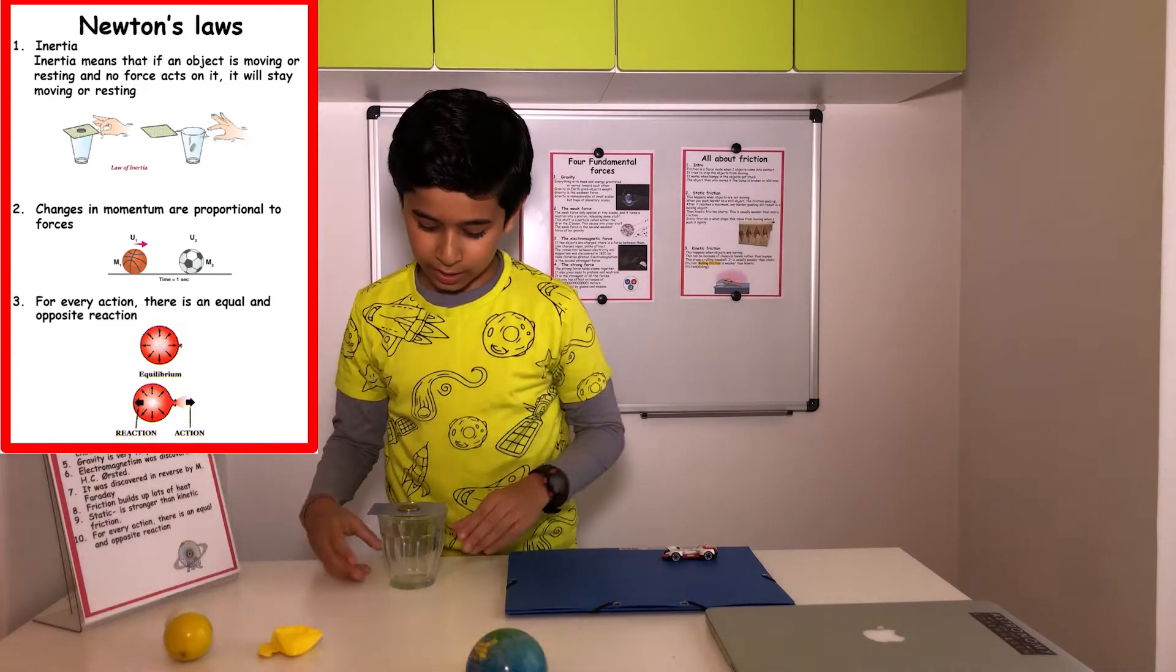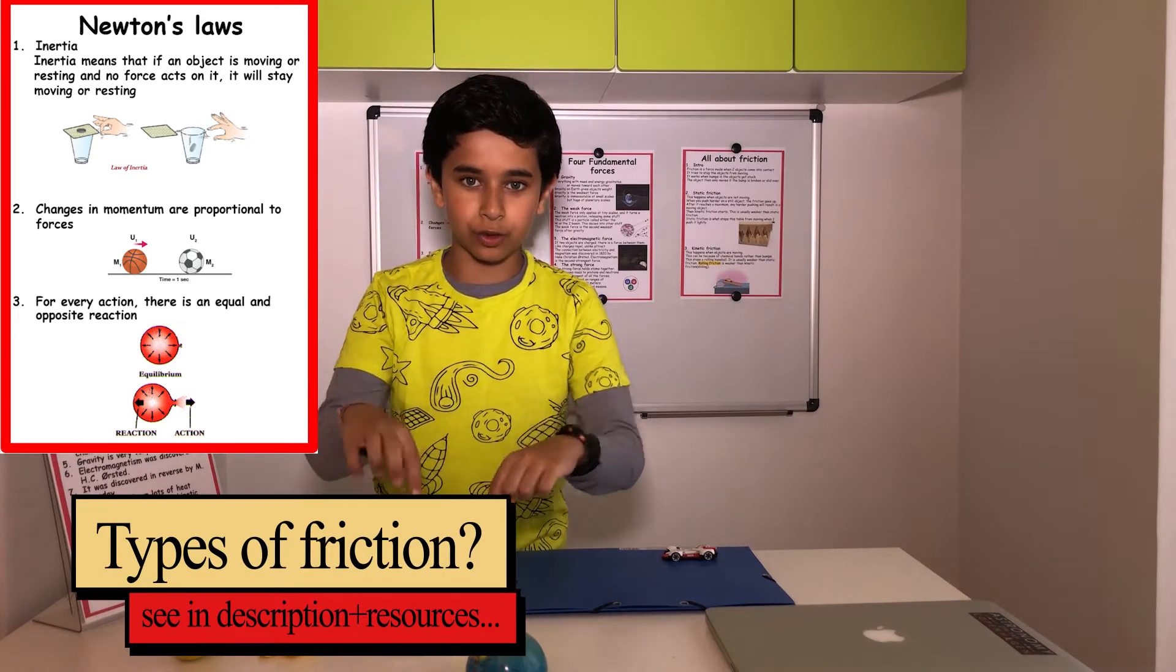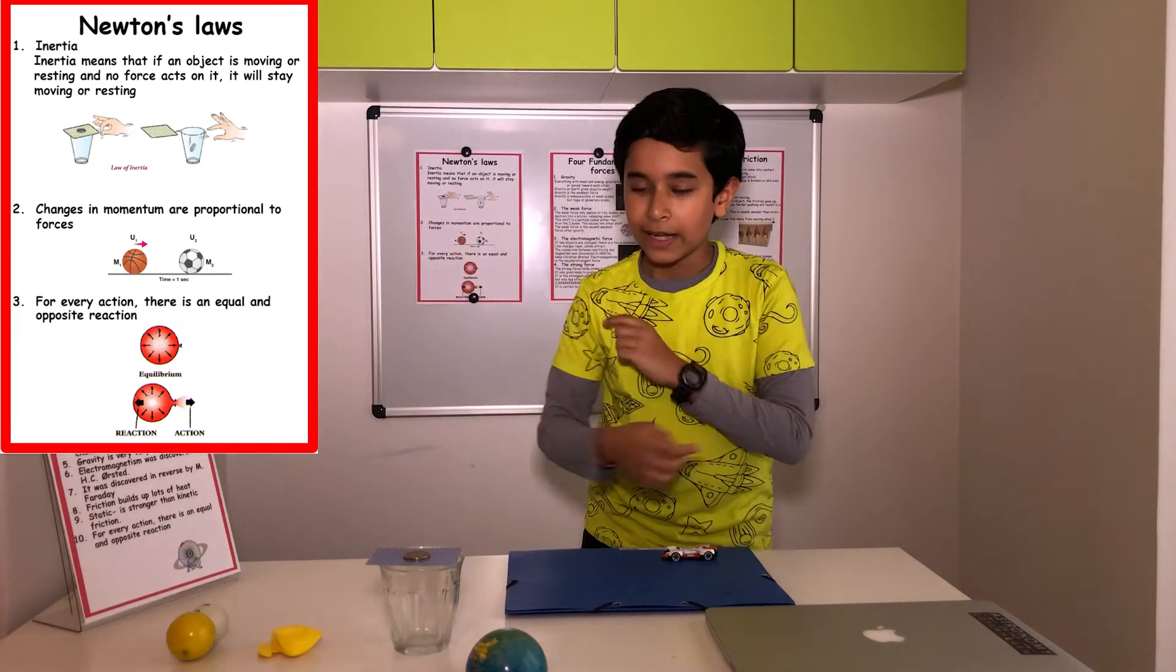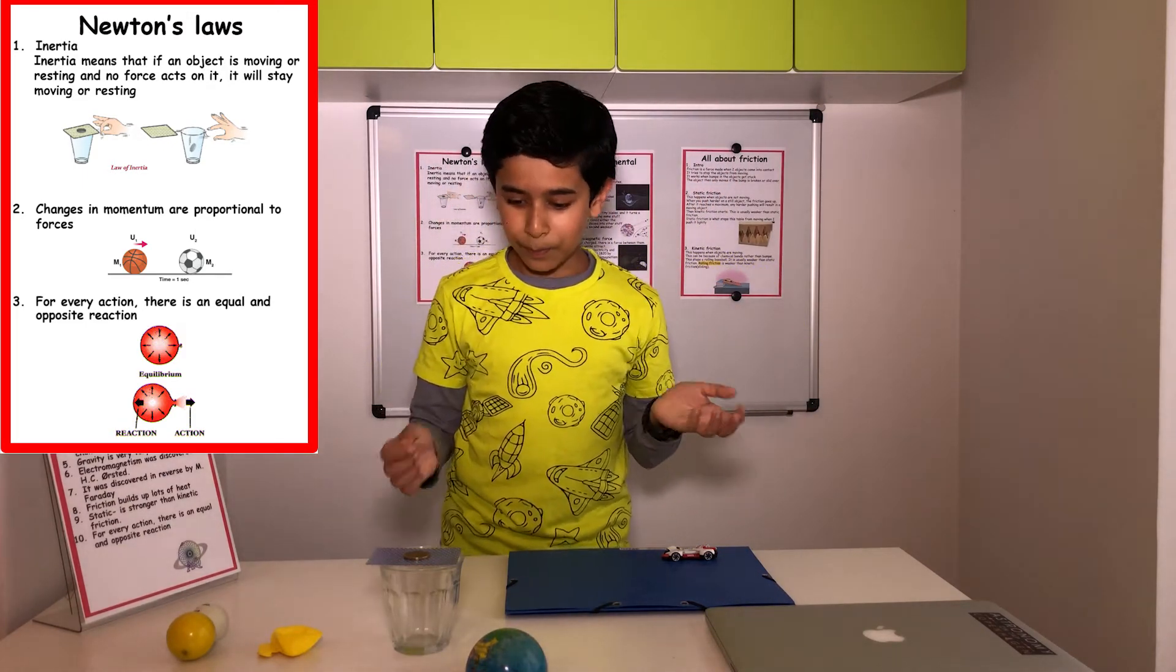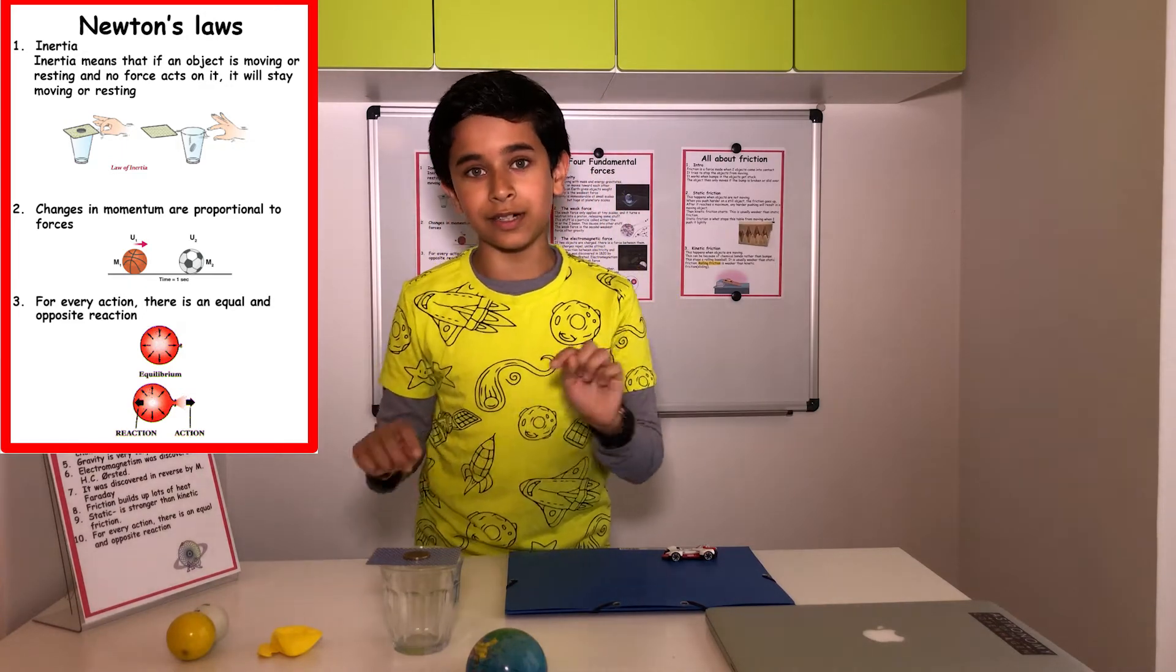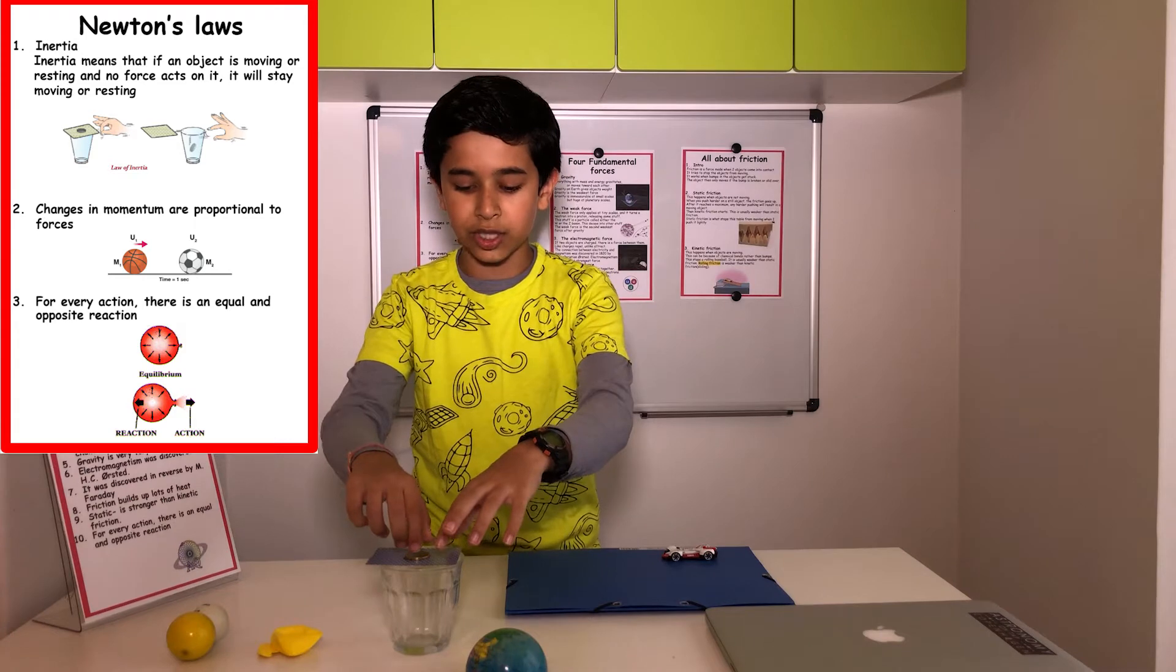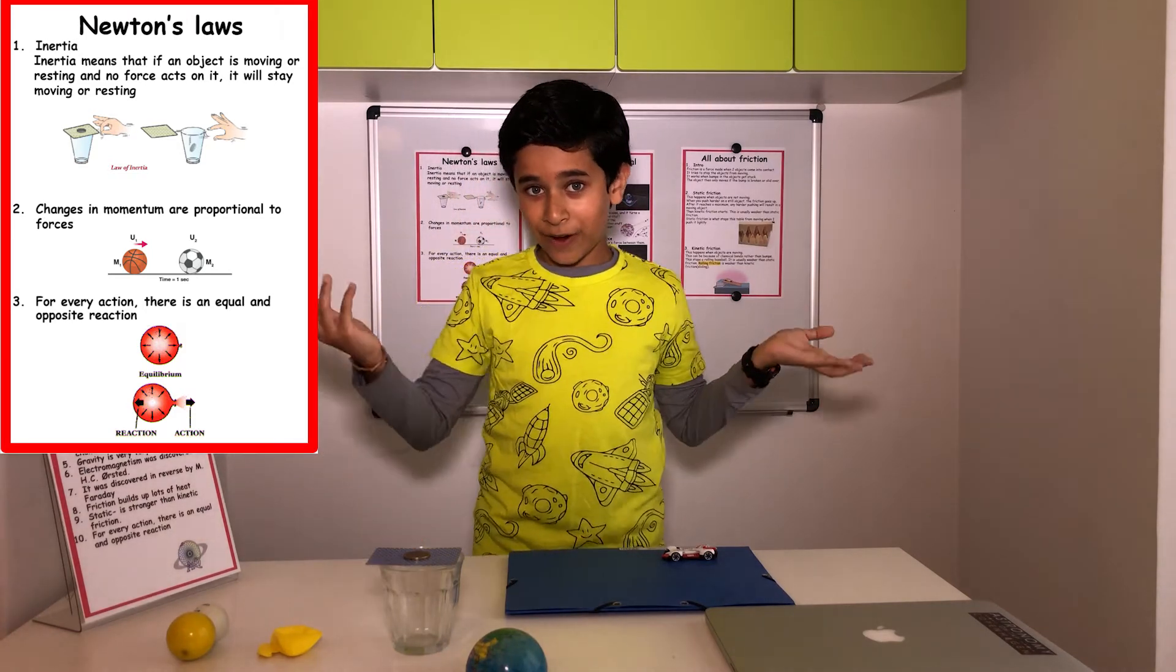Here you can see that there is a card and then a coin. I will flick the card and the card should go away. And friction should keep the coin on the card, right? But the coin has its inertia, so it might fall down. Its inertia will stop it from moving. Or will it go with the card? Let's find out.